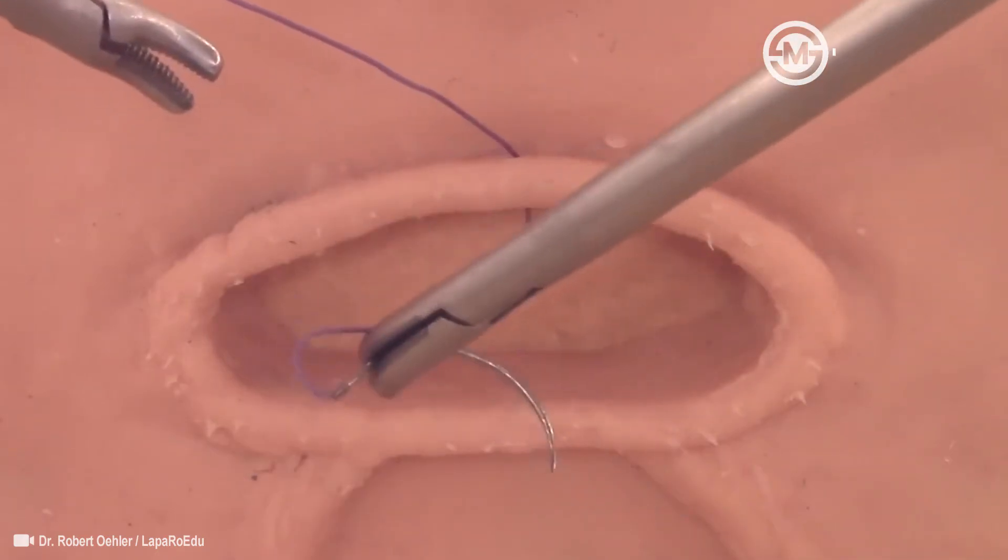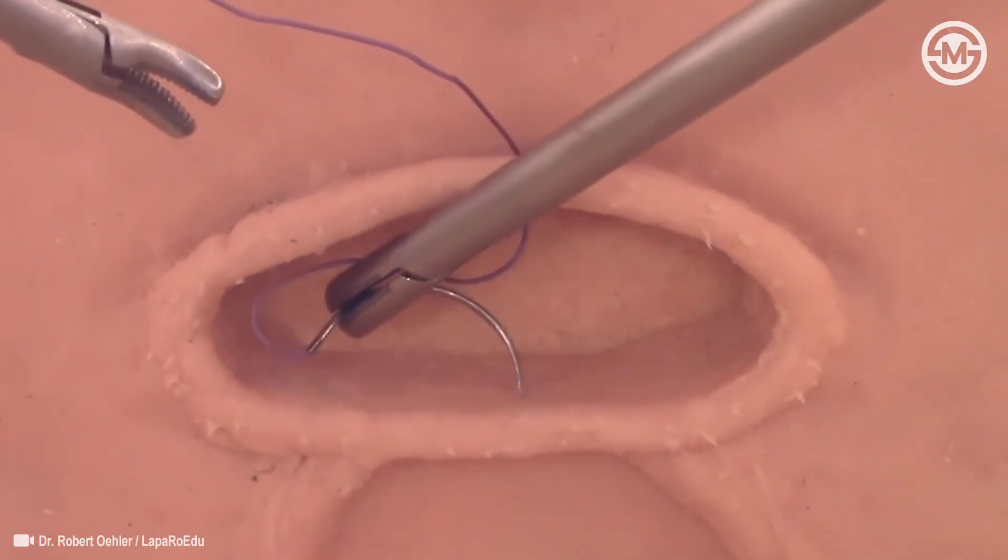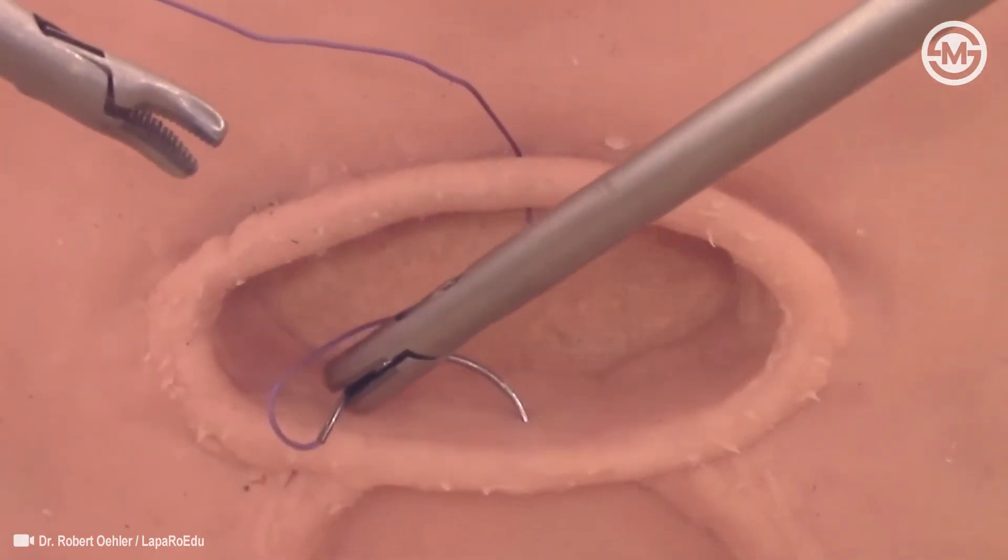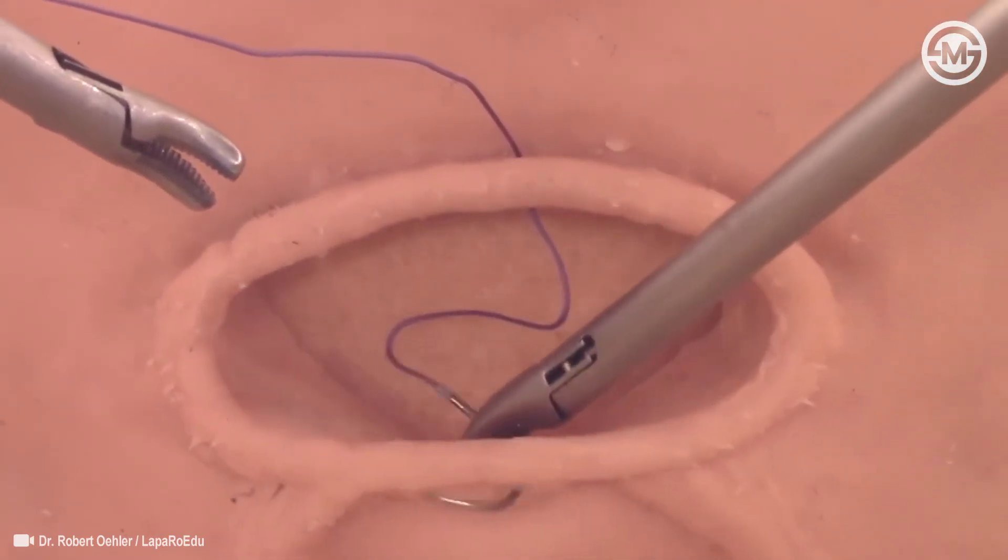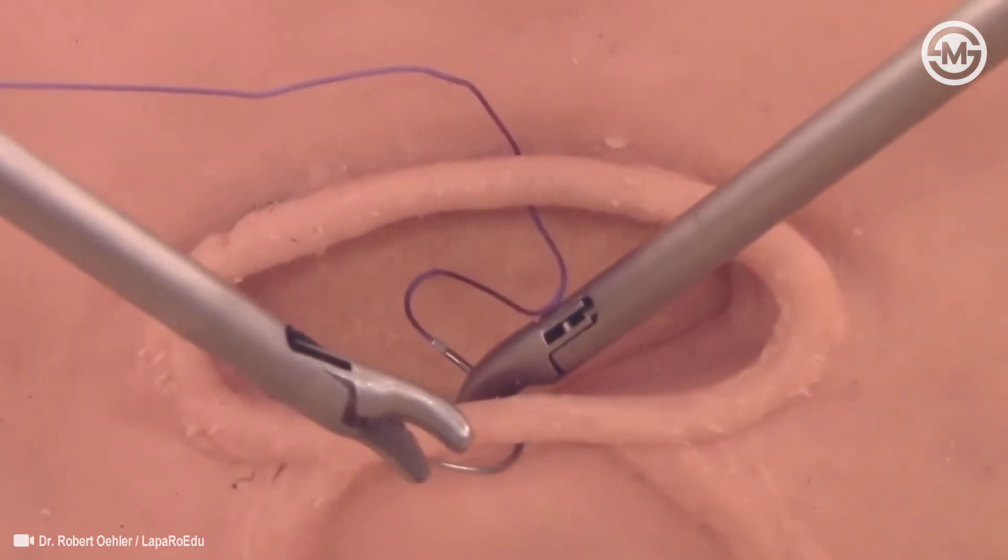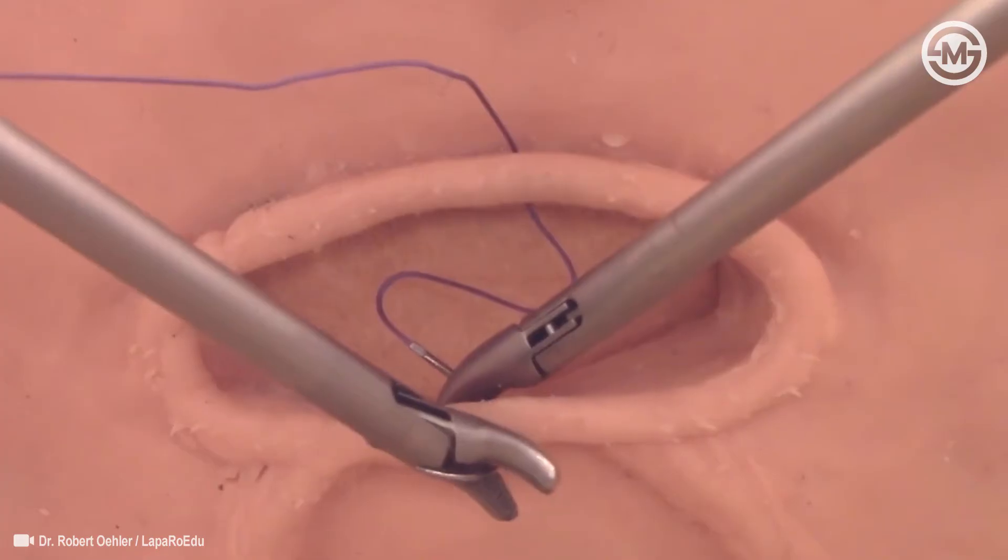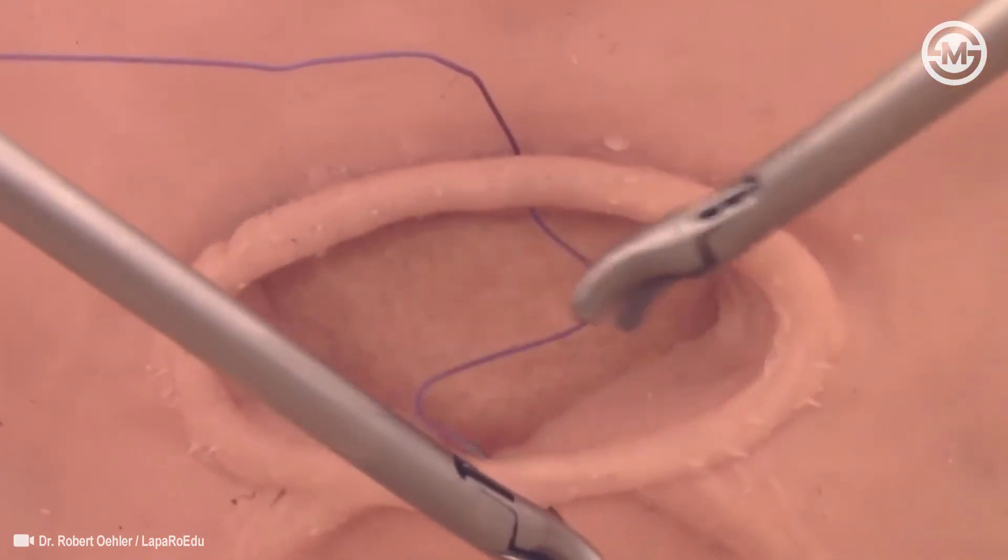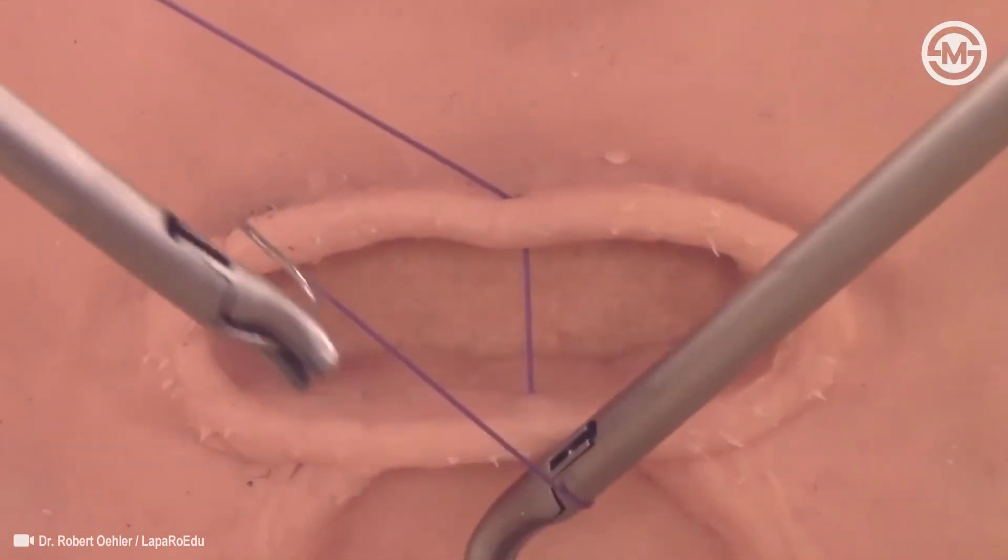The second stitch is made just like the first one, by advancing and rotating the needle driver, creating a transmural stitch with its entry point in the posterior vaginal skin. Again, the left needle holder takes the needle in the shown position with a firm grip and completes the stitch.